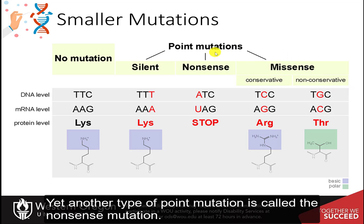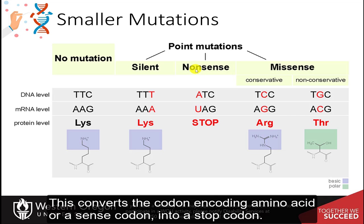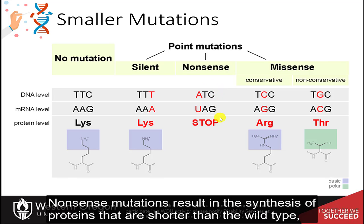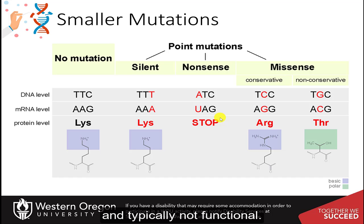Yet another type of point mutation is called the nonsense mutation. This converts a codon encoding an amino acid, or a sense codon, into a stop codon. Nonsense mutations result in the synthesis of proteins that are shorter than the wild-type and typically not functional.